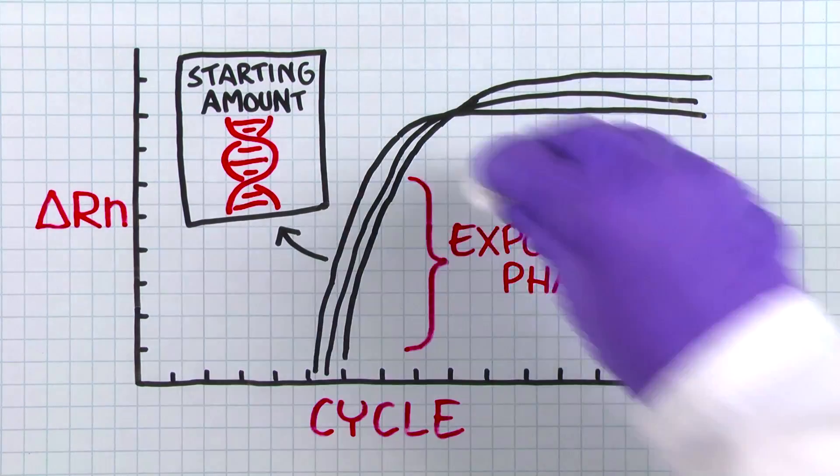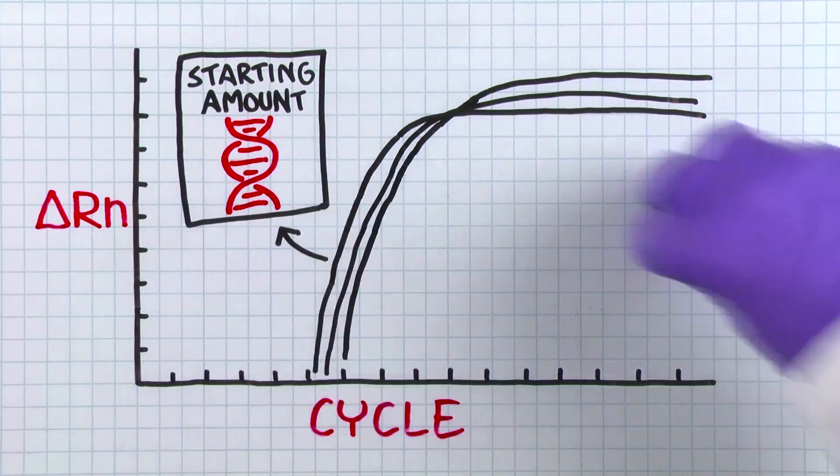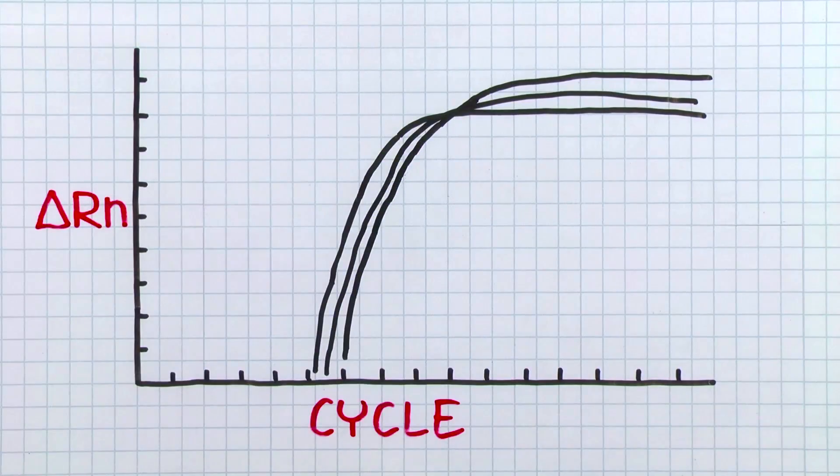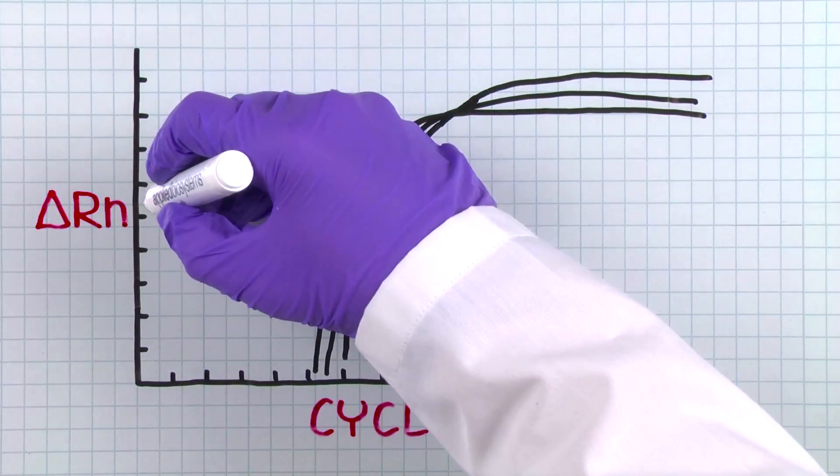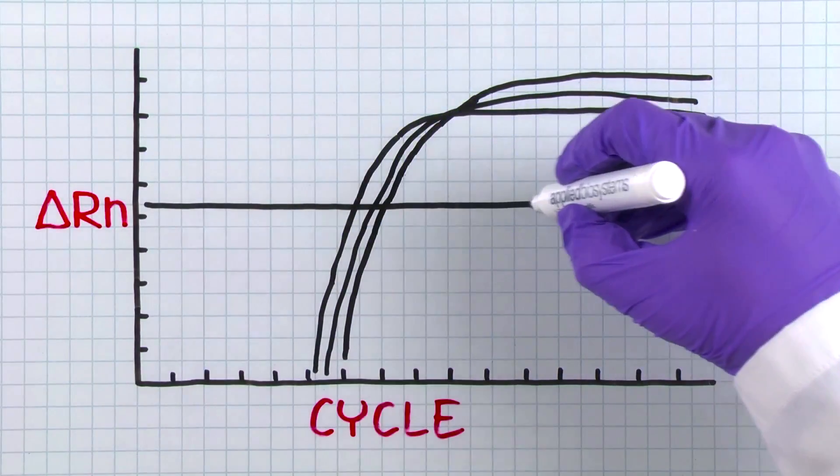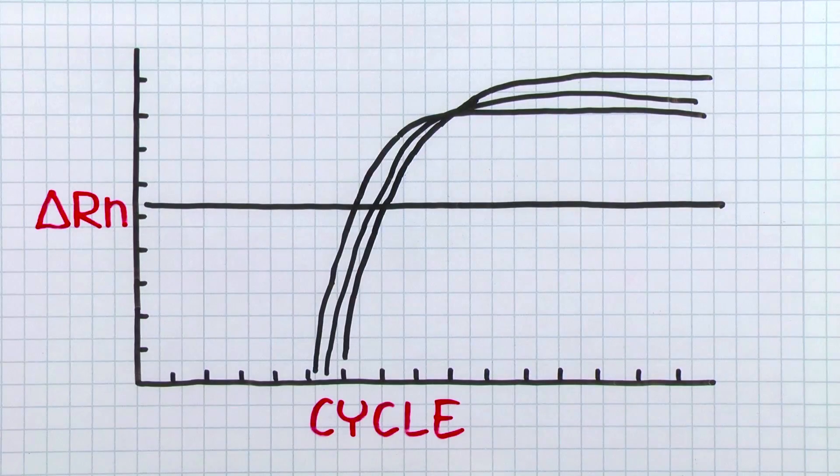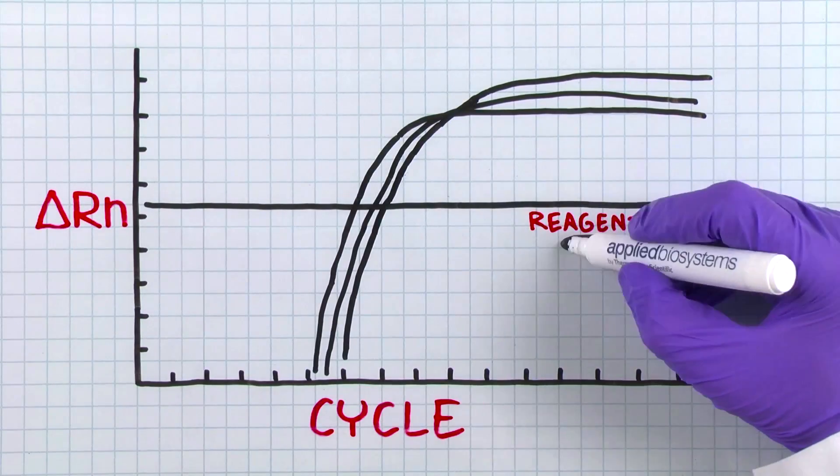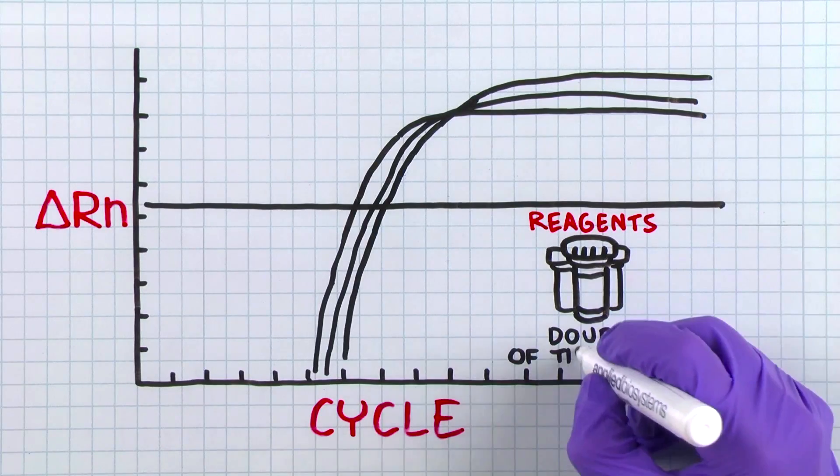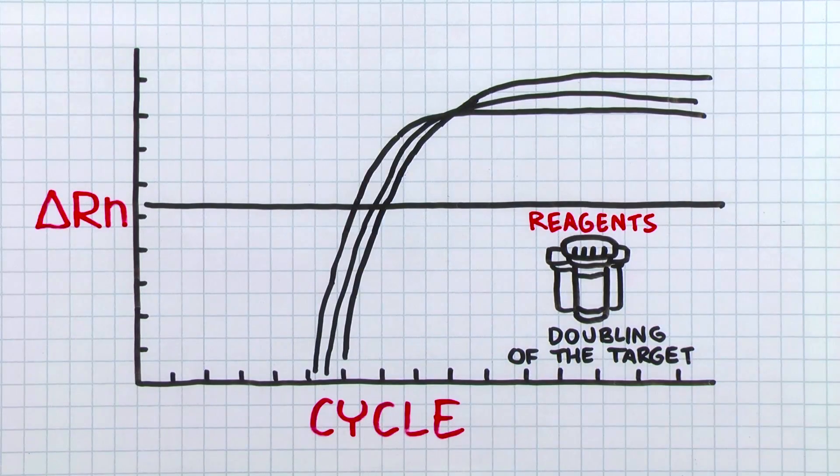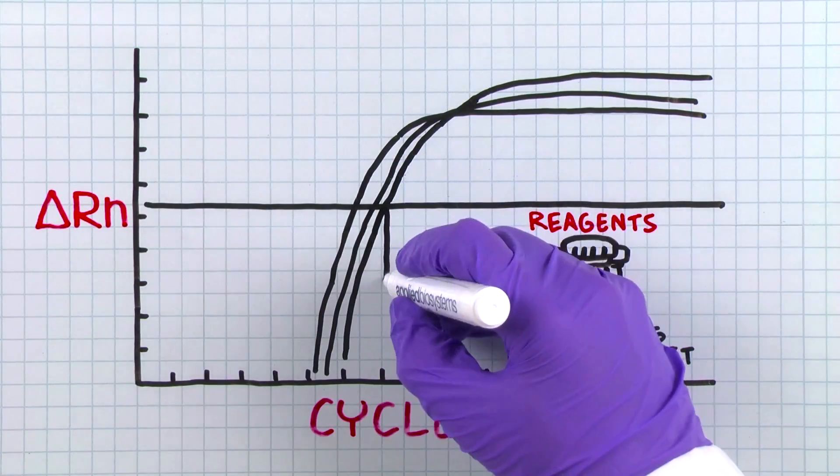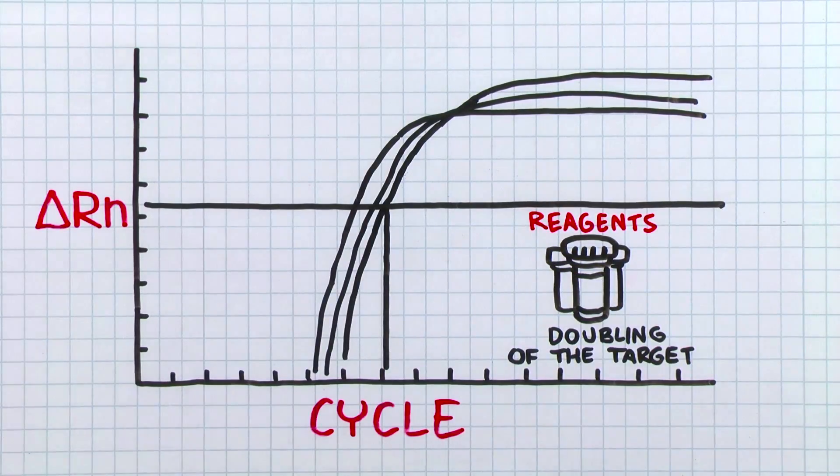Here's how. Let's examine this representative qPCR amplification plot. A threshold line is drawn through the plot in the exponential phase of the curve. Reagents are plentiful during this phase, and thus, there is an exact doubling of the target. From this intersection, we can drop down to the x axis and assign a CT value to this amplification reaction.